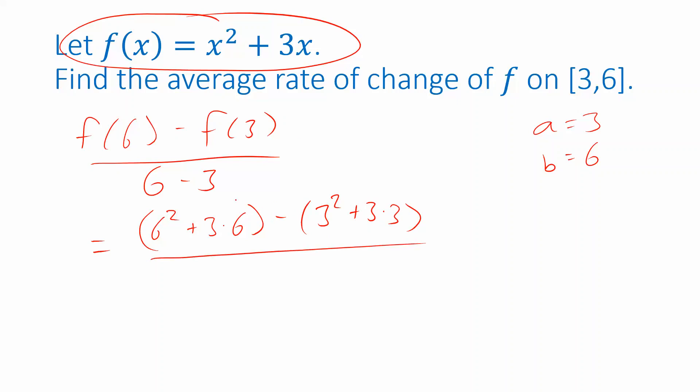I'm going to simplify the denominator as I go this time so that I don't have to write as much. Okay, now six squared is 36, three times six is 18, three squared is nine, and three times three is nine.